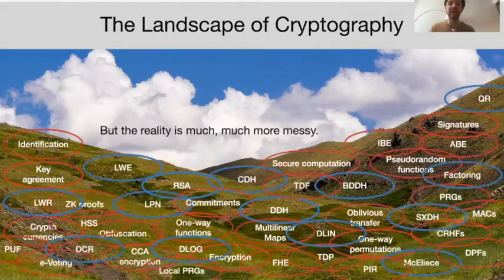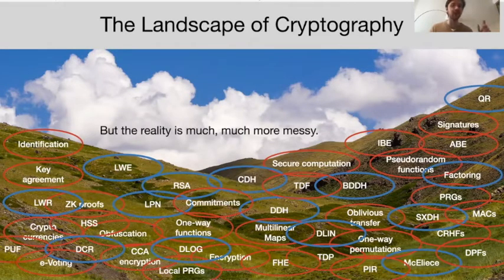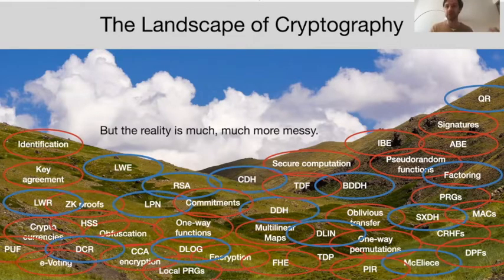However, in reality, the landscape of cryptography looks much more like this to a cryptographer. We have a tremendous amount of primitives, sometimes tiny variants of each other, and dozens, perhaps hundreds of different cryptographic assumptions which we use to build these primitives.